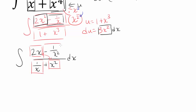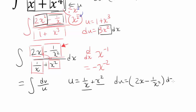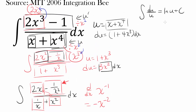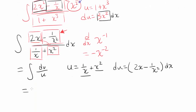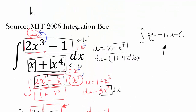When you differentiate 1 over x — remembering that 1 over x is x to the negative 1 — the negative comes out and you have x to the negative 2, which is precisely negative 1 over x squared. So this expression is in the form du over u. Our u is 1 over x plus x squared, and our du is the numerator: differentiating x squared gives 2x, and differentiating 1 over x gives negative 1 over x squared dx. The integral of du over u is natural log of u plus c, so our answer is the natural log of 1 over x plus x squared, plus c.